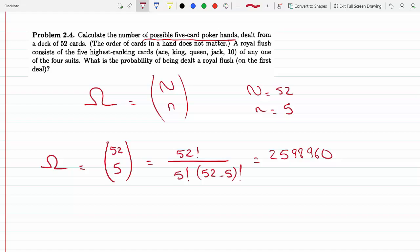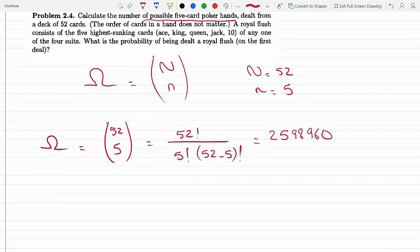Now it says a royal flush is the five highest ranking cards: ace, king, queen, jack, and 10 of any of the four suits. So we have four suits and we could have these five cards from any of the four suits. What's the probability of being dealt a royal flush on the first deal?